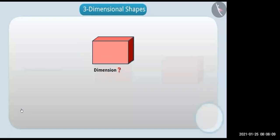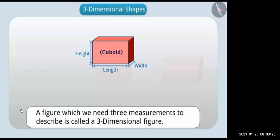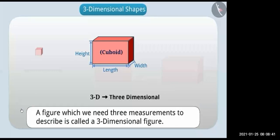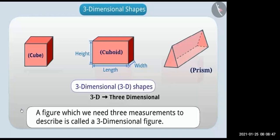How many measurements are necessary to describe the third shape? This shape is a cuboid — to describe it we need length, height, and width. A figure requiring three measurements to describe is called a three-dimensional figure, or 3D for short. Generally all solid shapes such as cube, cuboid, and prism are three-dimensional or 3D shapes.